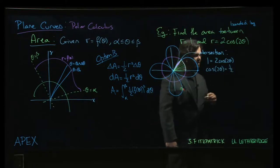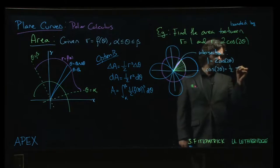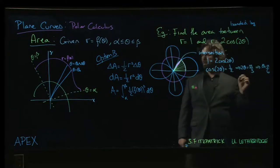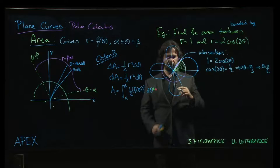Okay. Cos 2 theta should be equal to 1 half. That means 2 theta should be pi over 3. That means theta should be pi over 6. Okay.